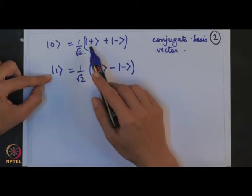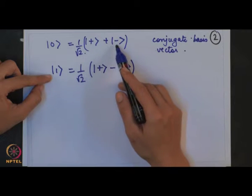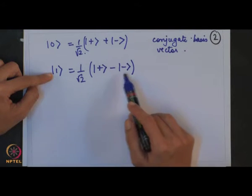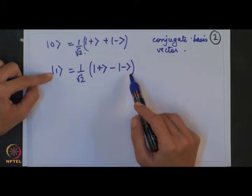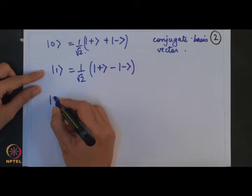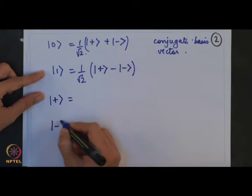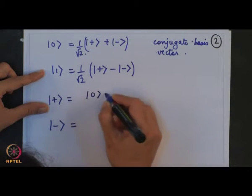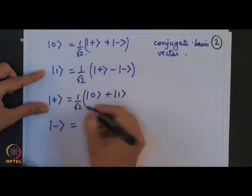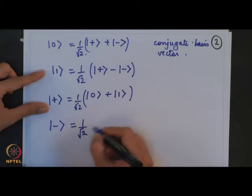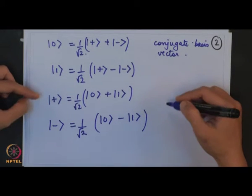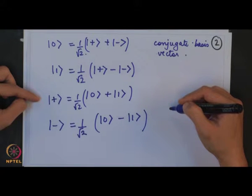In the conjugate basis, ket-plus plus ket-minus gives eigenvector |0⟩, and ket-|1⟩ is represented as ket-plus minus ket-minus. This can be inverted to express things in terms of ket-plus and ket-minus.